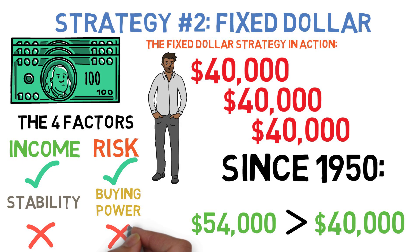So in terms of the four factors the fixed dollar strategy is again above average in income and risk but below average in stability and buying power.